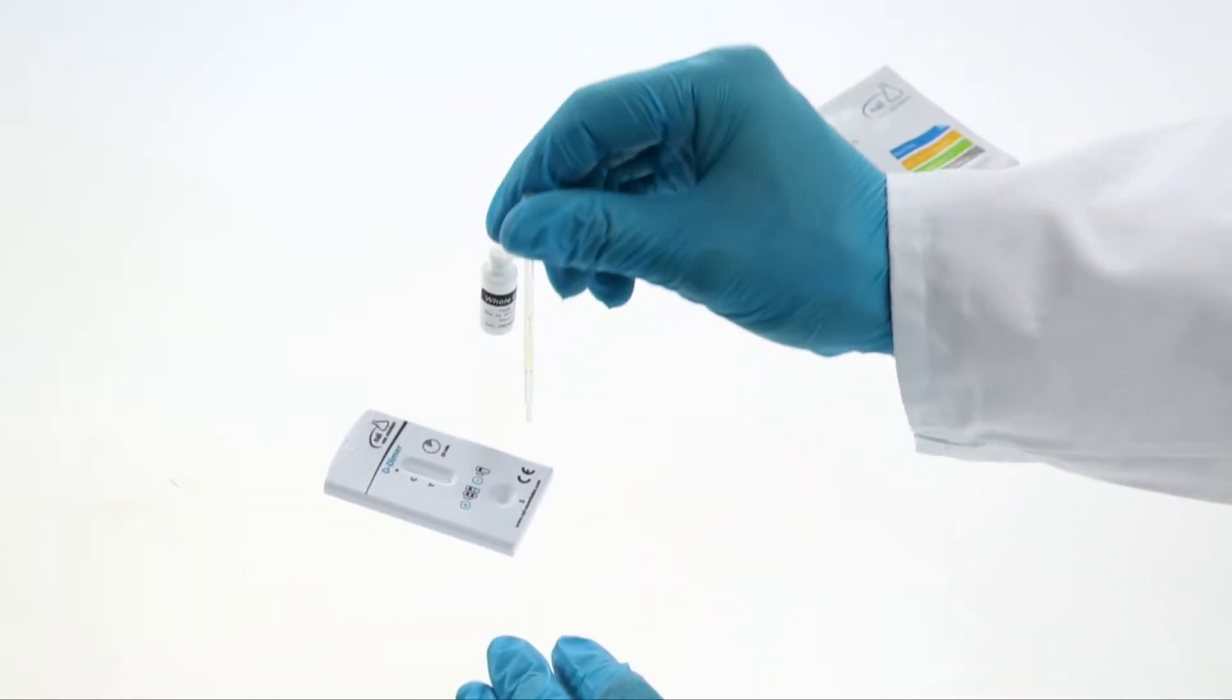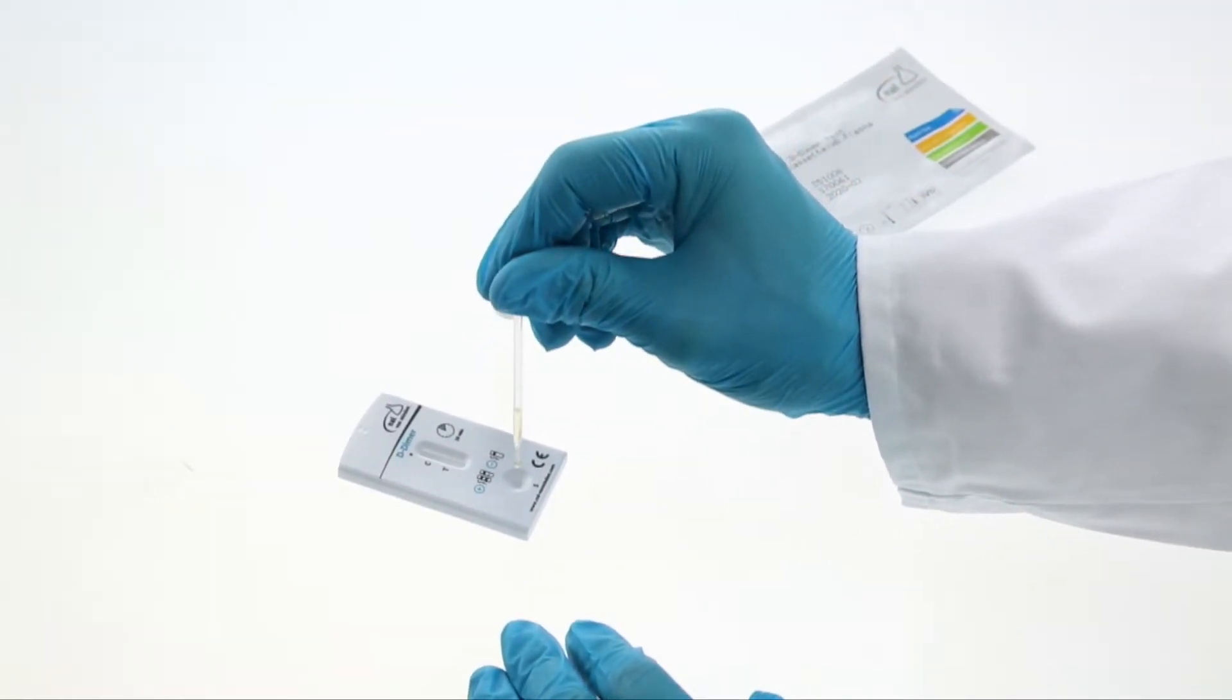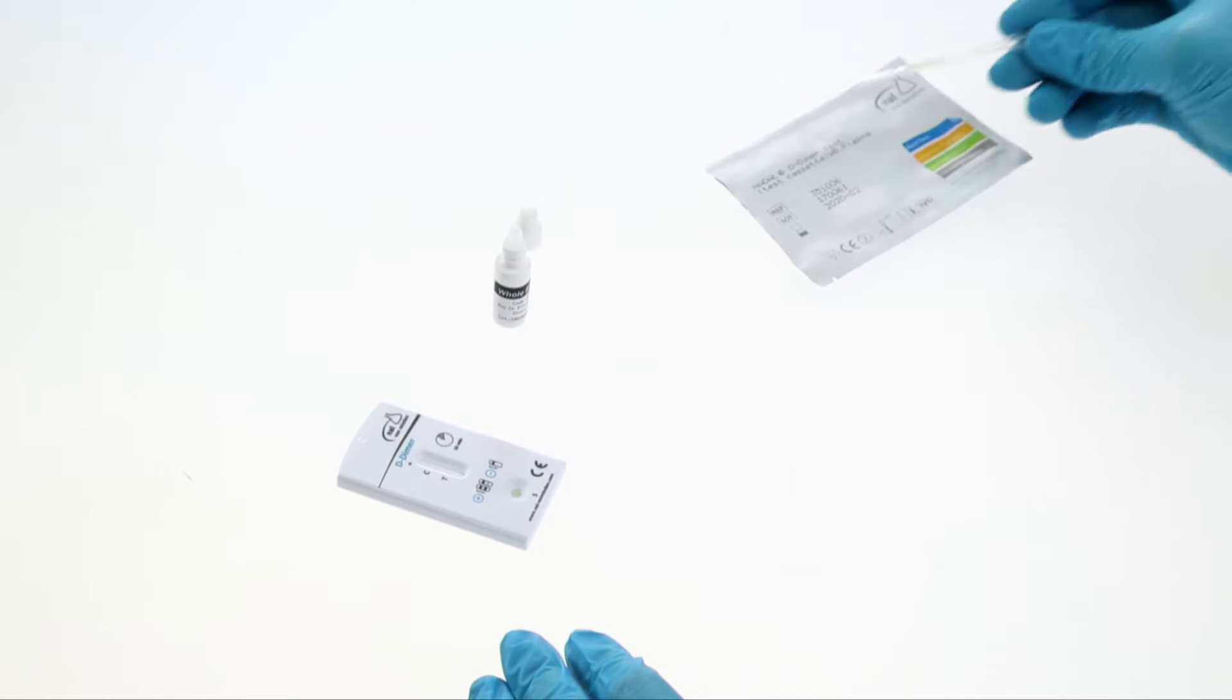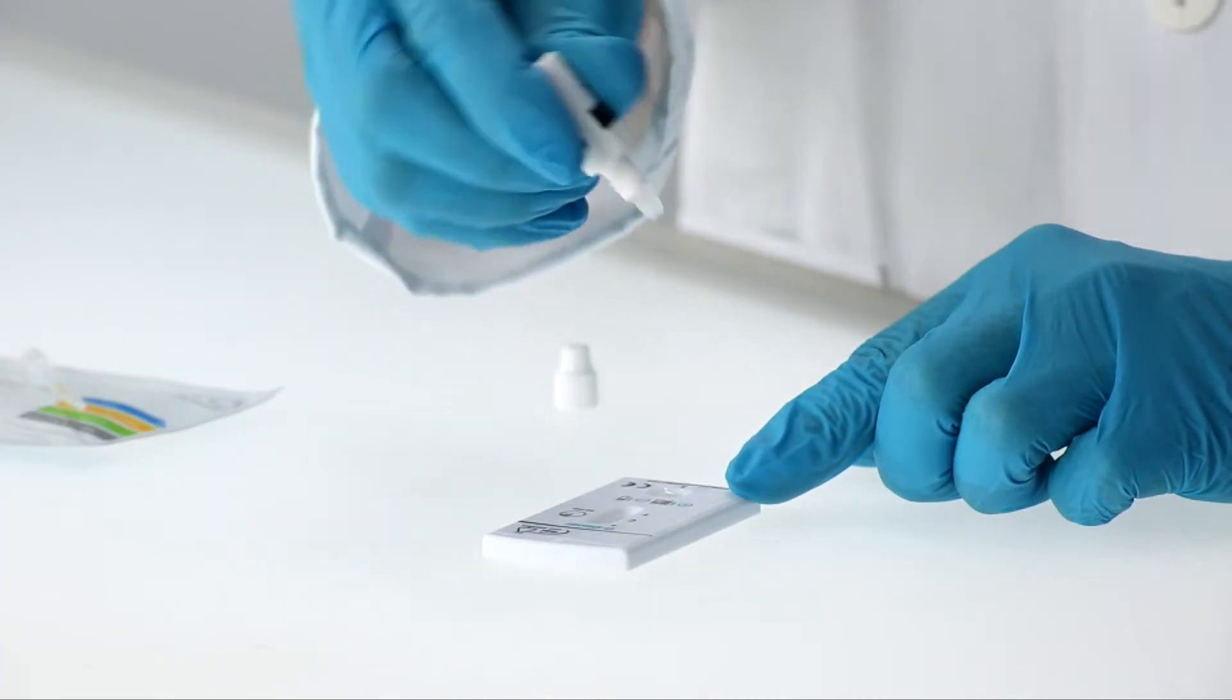Holding the pipette provided vertically, dispense one drop of plasma to the sample well of the test cassette. Then add one drop of buffer.